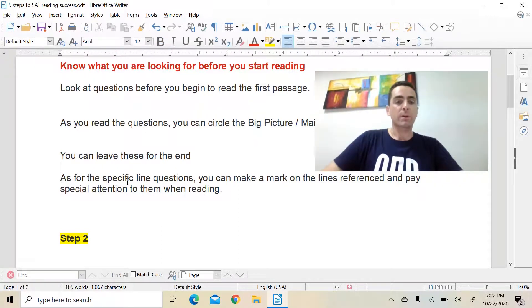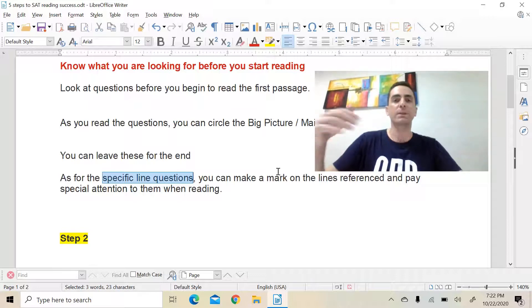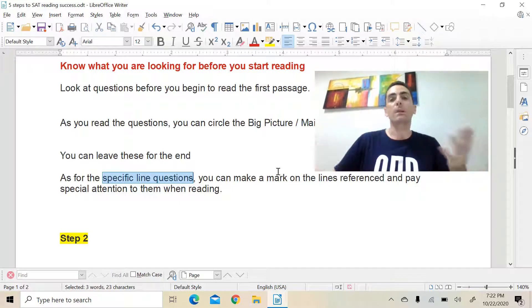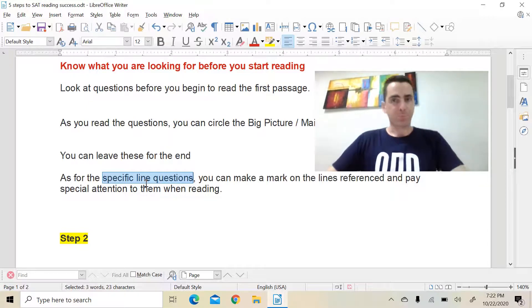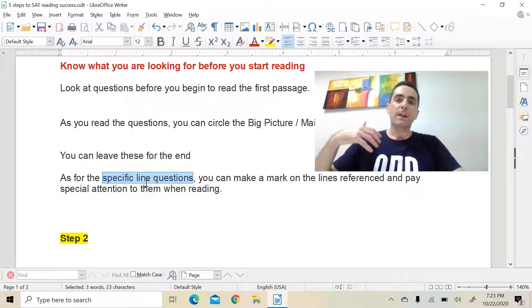Then the other questions in there will be what are called specific line questions. These will be questions where it says in line five, the word, whatever it is, is used. Which word below has the closest meaning to it. So when you go through these specific line questions, you then go back to the reading text itself and you underline, you put a mark beside that line and then you write the question number that it corresponds to from the questions. This way, once you've circled the main idea, you've given yourself a little bit of a map to show you where the specific line questions are located. It makes it much quicker when you come to answer the questions.